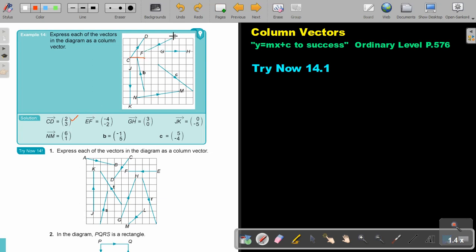EF. Remember EF, so it's 1, 2, 3, 4, that's negative 4 and down negative 2.